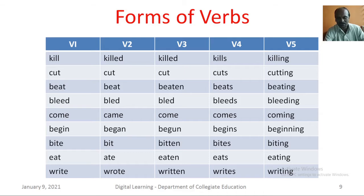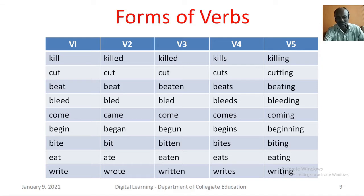Forms of verbs. A verb can take five forms. V1 is the base form of the verb. V2 is the past form. V3 is the past participle. V4 is the singular form of the verb and V5 is the present participle of the verb. Most verbs like kill have a past tense and past participle with -ed; they are called regular verbs. But many of the most frequent verbs like cut, beat, bleed, etc. are irregular.